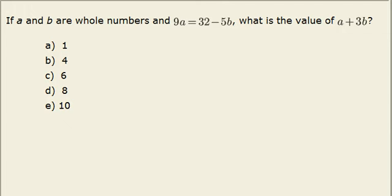If a and b are whole numbers and 9a equals 32 minus 5b, what is the value of a plus 3b? To start this problem, I will add 5b to 9a to get the equation 9a plus 5b equals 32. I'll be using this equation for trial and error.